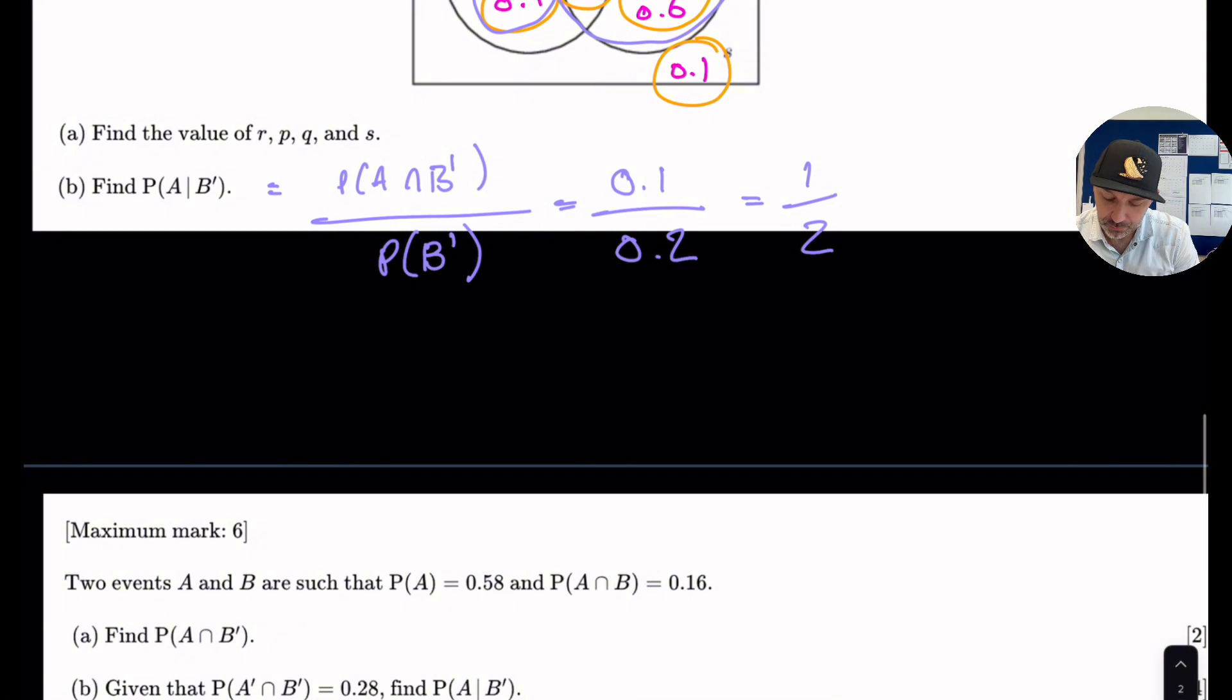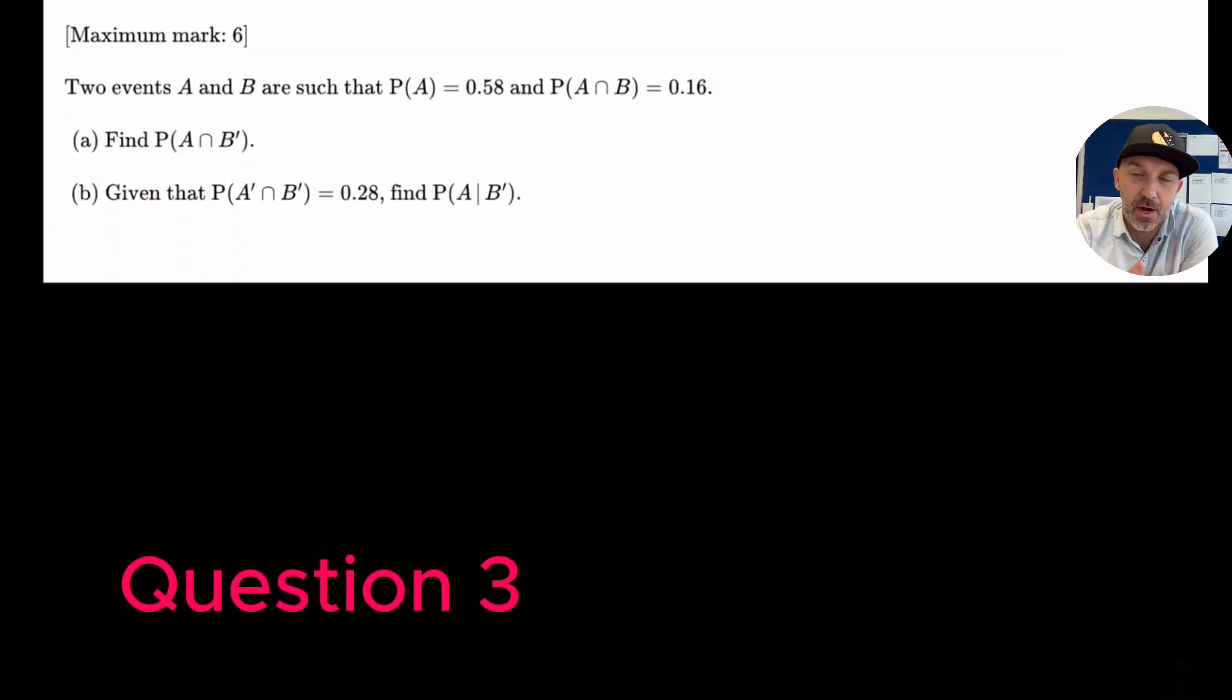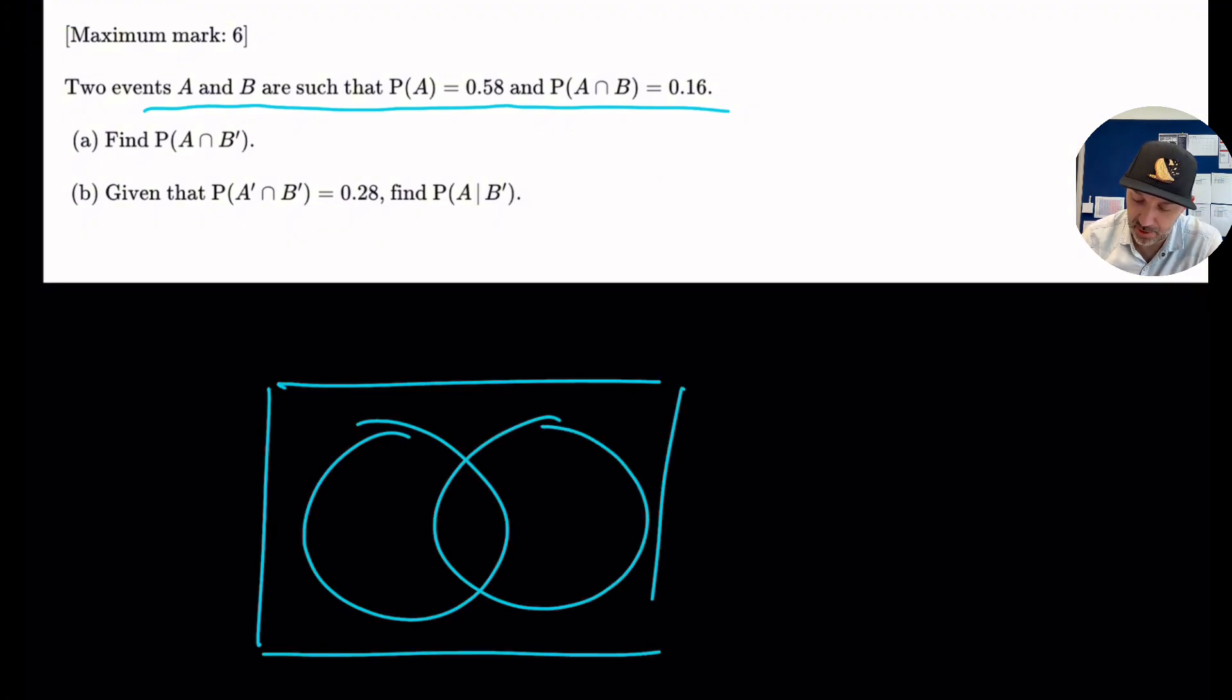Let's do one more. Okay. So this one, they have not given us a Venn diagram. I often find that in many of these questions, it's very, very useful to draw a Venn diagram. So two events A and B are such that, okay, they've given us some information here. So I'll start by drawing a Venn diagram and labeling A and B because this is very, very helpful when we're doing some of these questions.